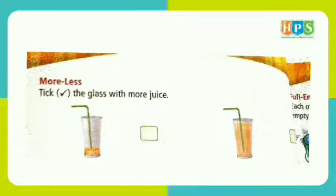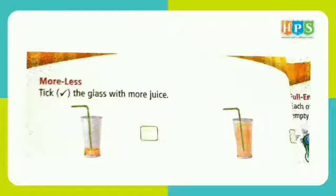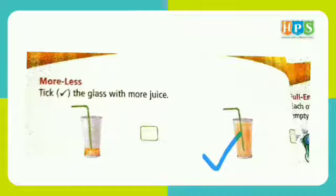More and Less. More means Zadha. Less means Kam. We can see two glasses of drink. In the first glass, there is less drink. And in the second glass, on the right, there is more juice. We have ticked the glass which has more juice.